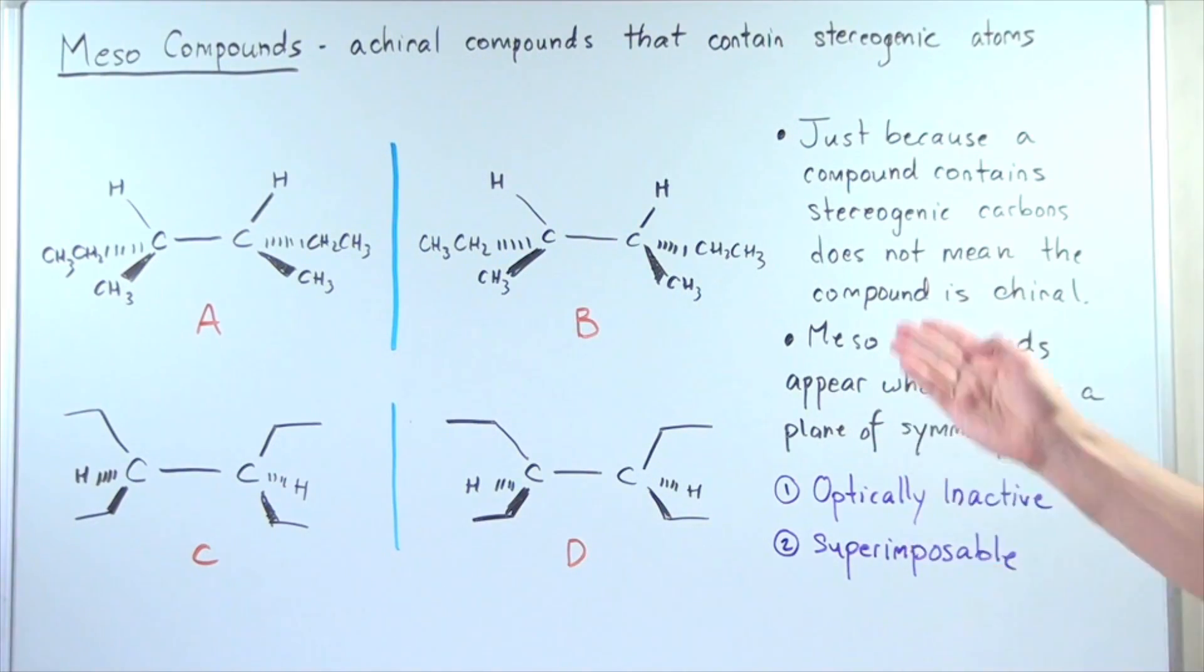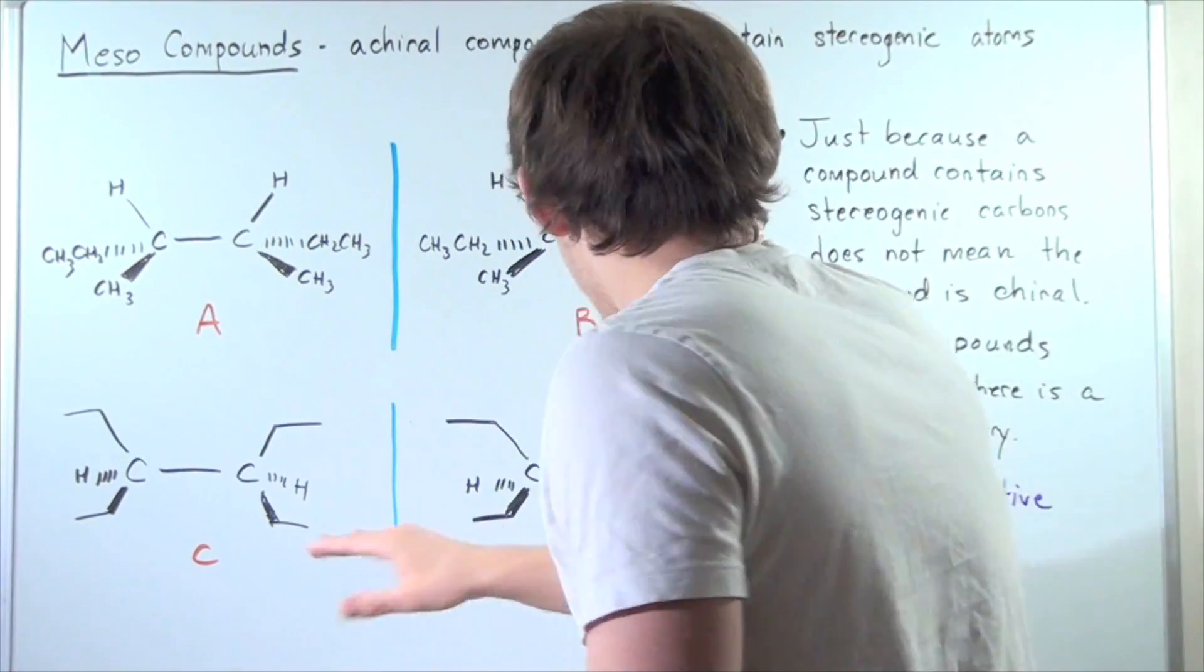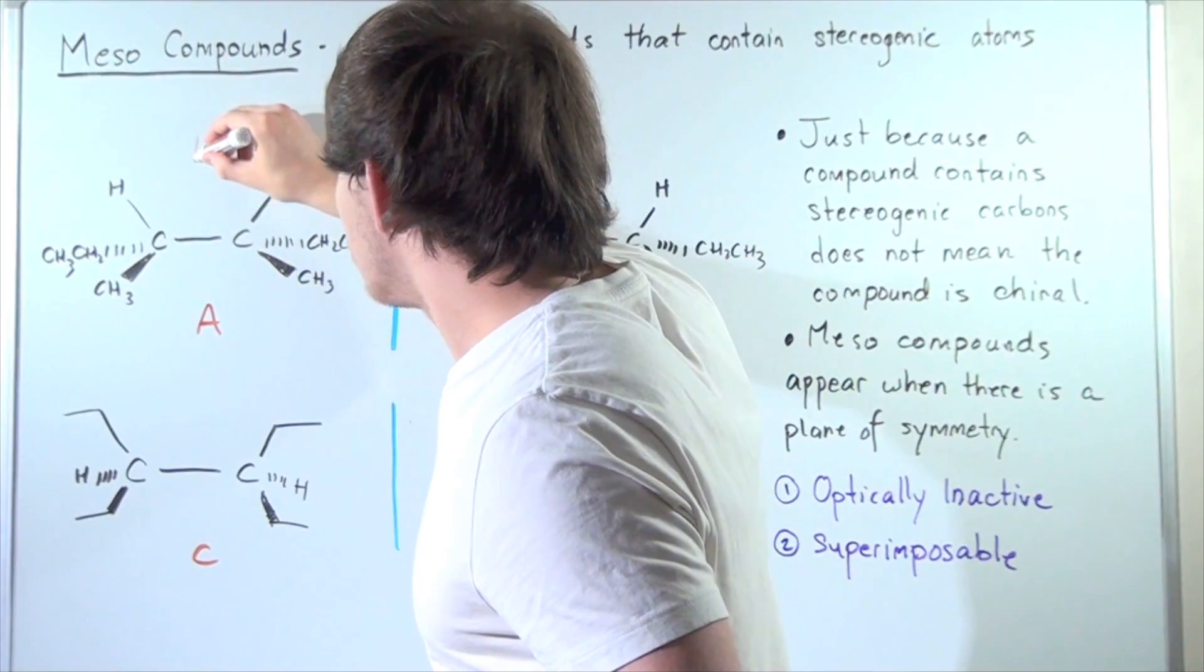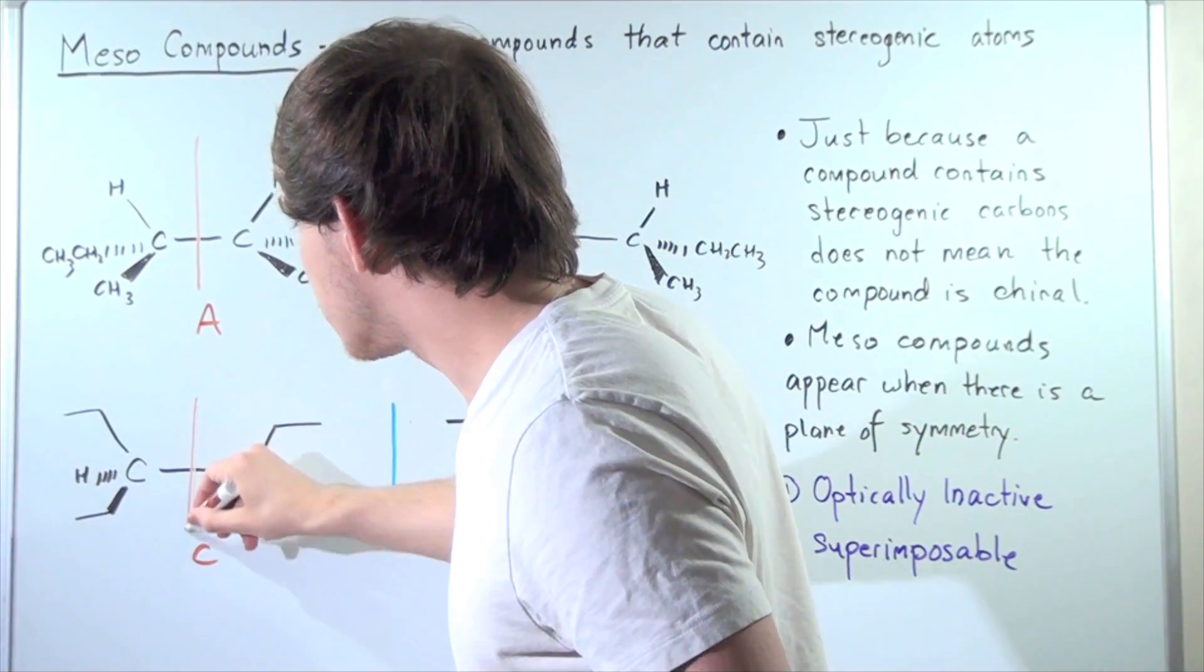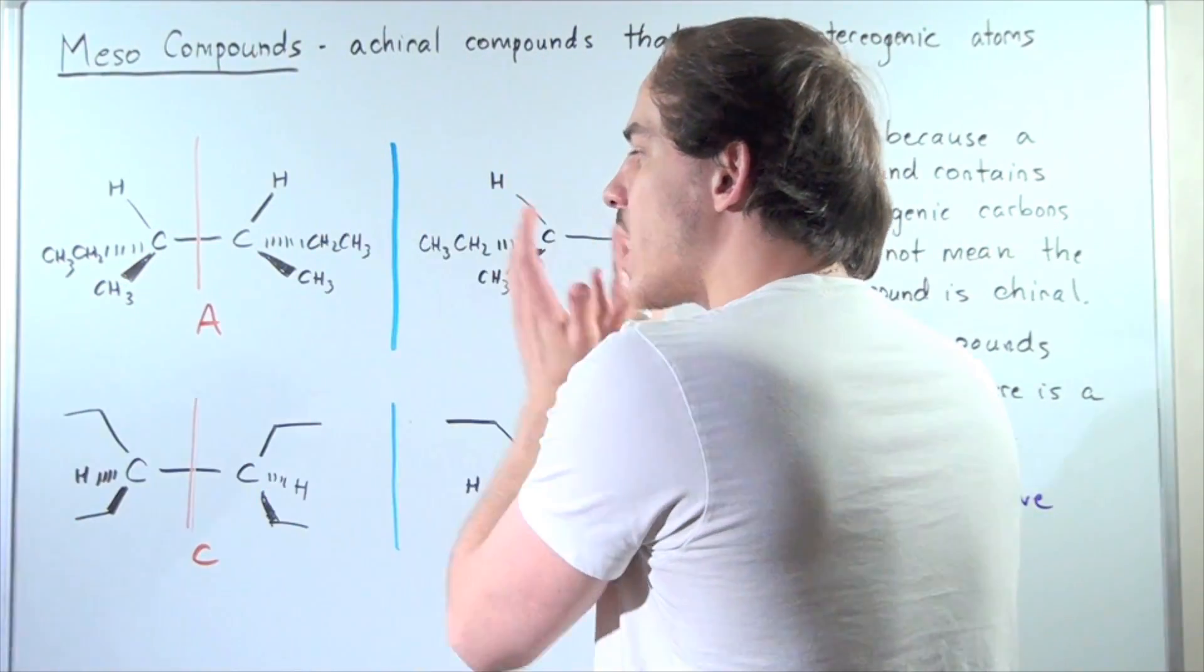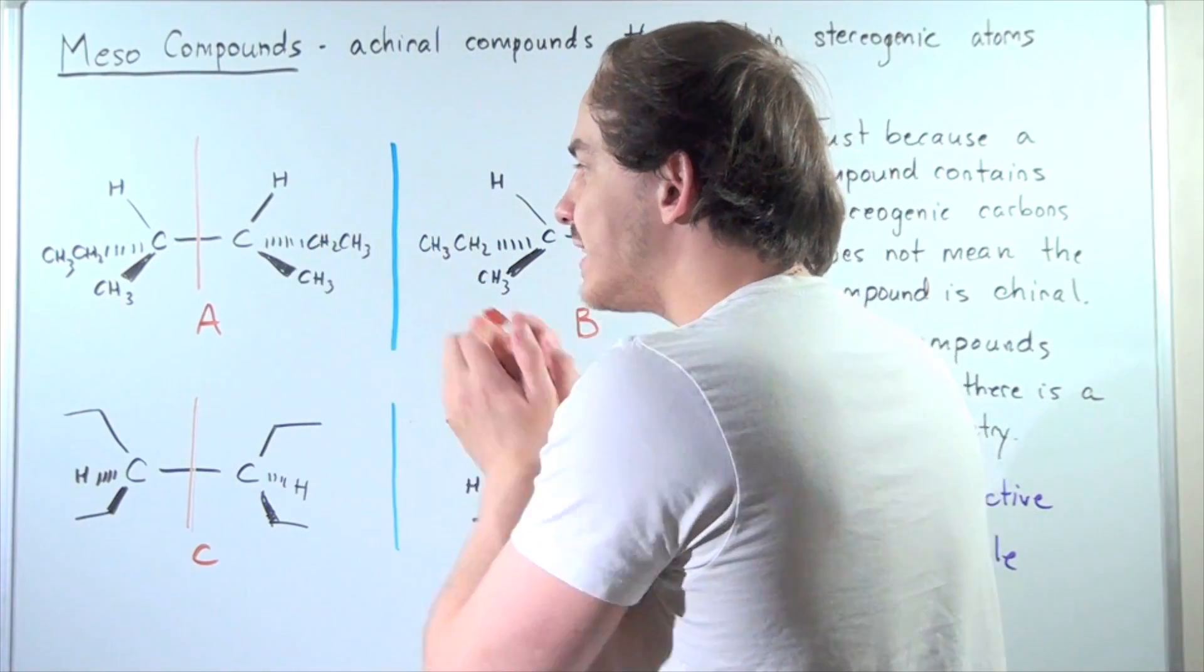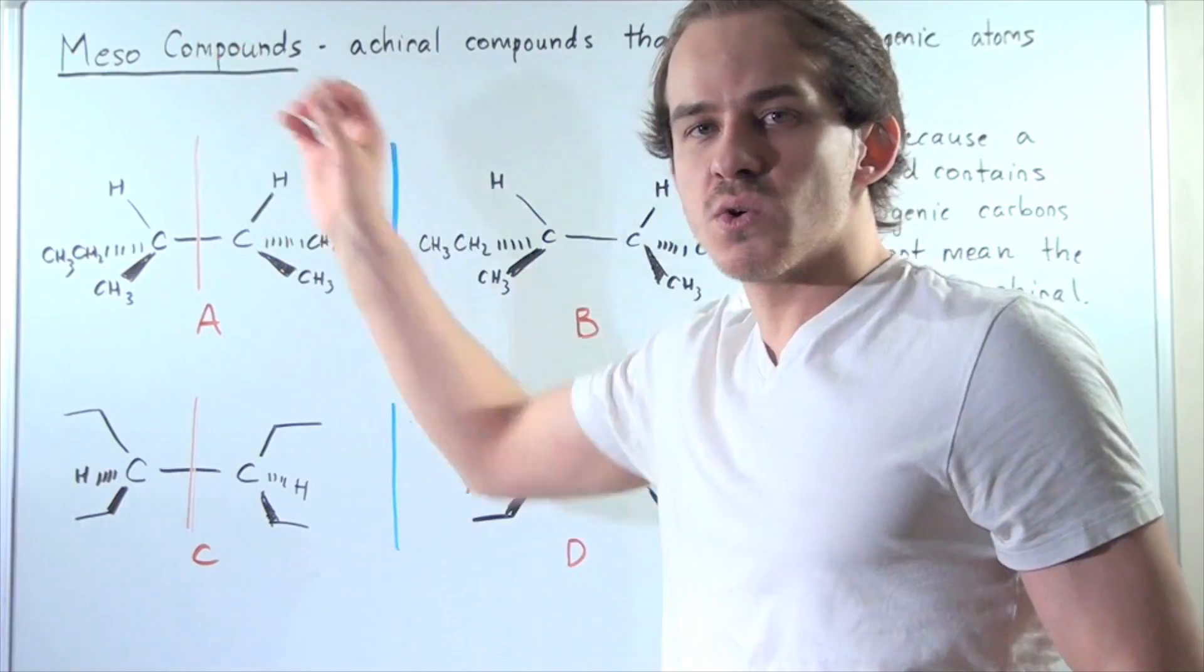Mesocompounds appear when there is a plane of symmetry. If we look at compound A and compound C, and we draw our plane of symmetry for both of these compounds, we see that the left side is identical to the right side for both A and for C. And that is one way to tell whether or not we have mesocompounds.